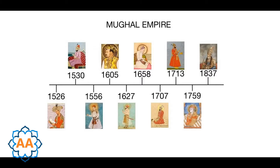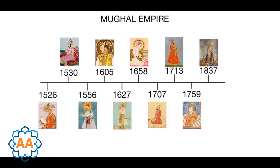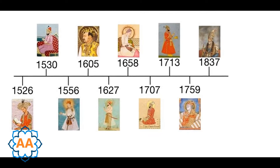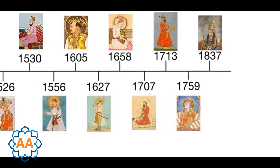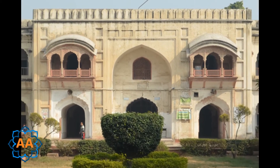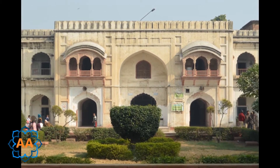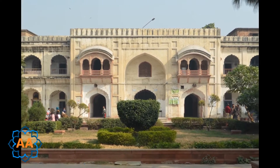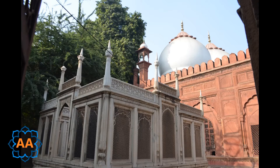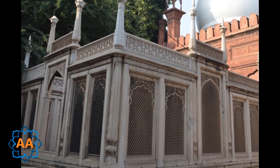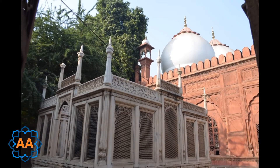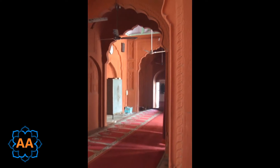Evidence regarding the period of construction of the complex and its attribution are quite contradictory. Some scholars claim it was constructed between 1674 and 1709. British sources presume that the madarsa was built in the late 18th century by Ghaziuddin Khan II, the son of Ghaziuddin Khan I. It is possible that the mosque and tomb were constructed by Ghaziuddin Khan I in his lifetime, while the madarsa would have been constructed later by his son.